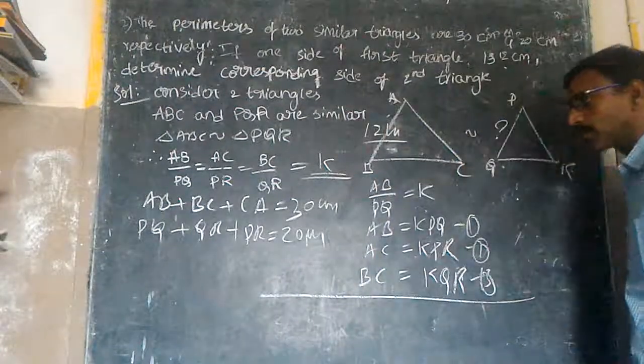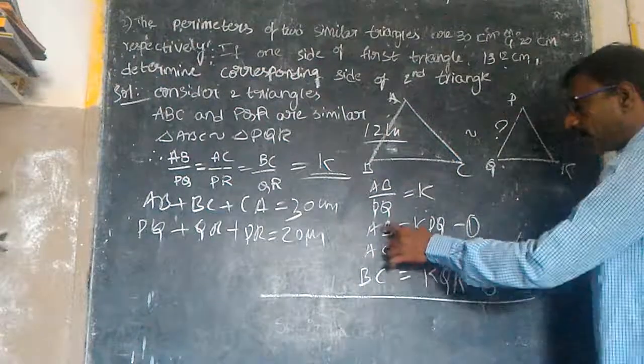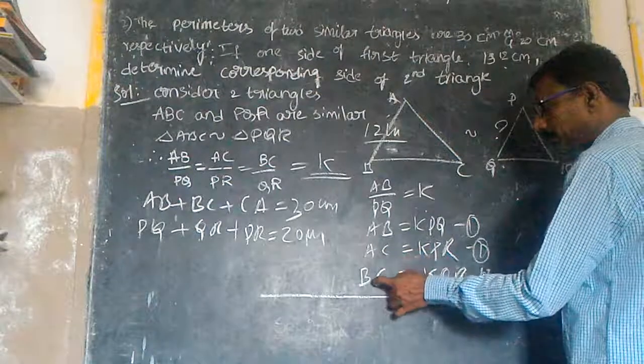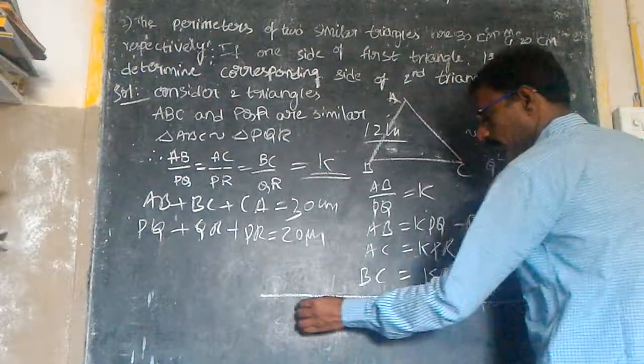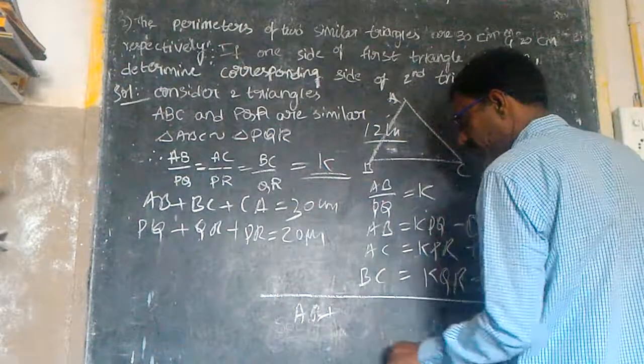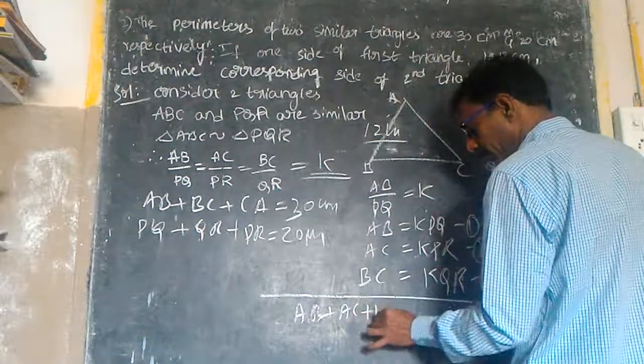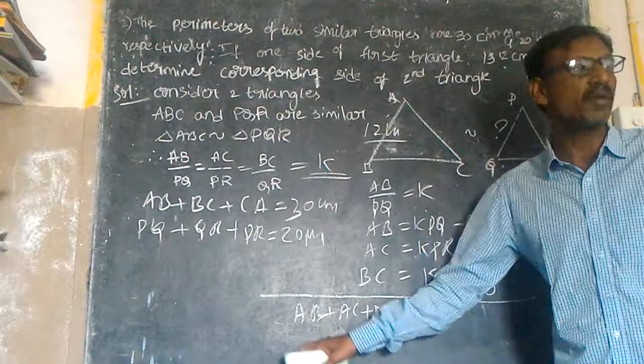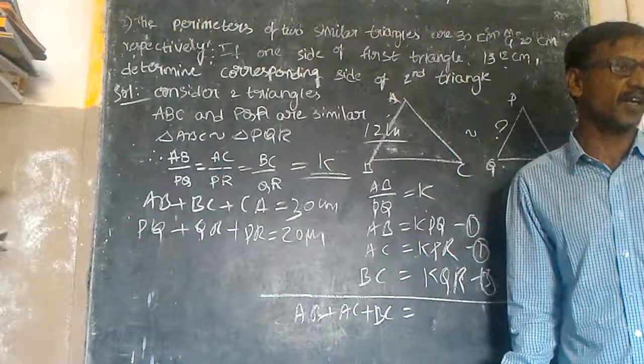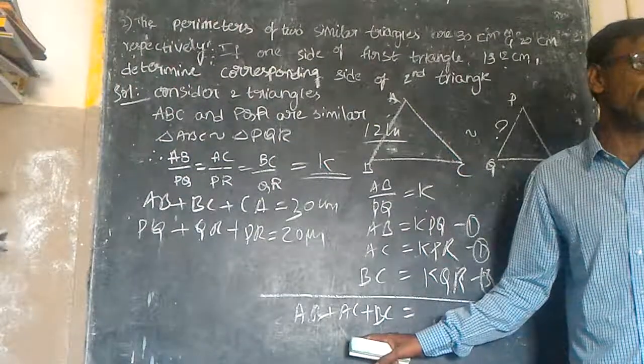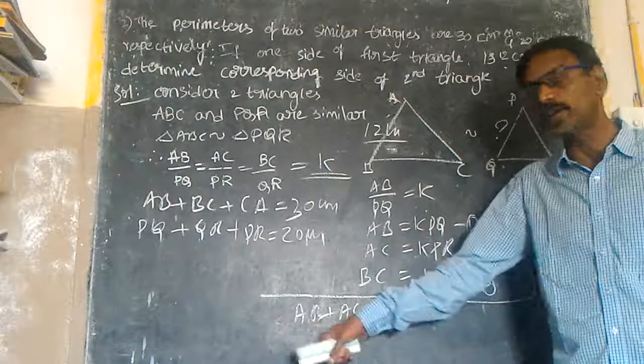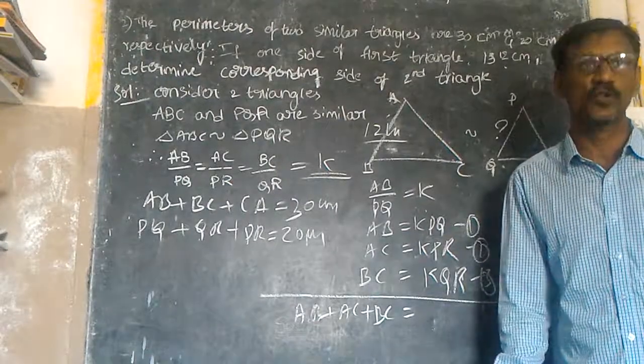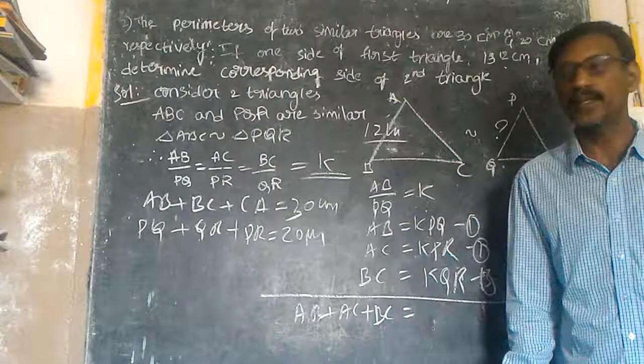Now add AB plus AC plus BC. These are the sum of the sides of the triangle, that is perimeter of the triangle.